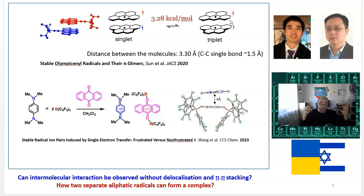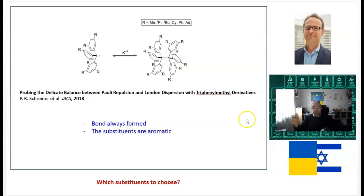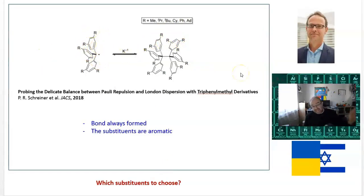Can intermolecular interaction like that with spin inversion be observed without the delocalization and pi-pi stacking? Can we make two radicals with localized electrons to form a complex? The idea comes from Professor Schreiner's group. He studied the coupling of radicals with aryl substituents and saw that before this bond forms there is an attraction by London forces or London dispersion—a sort of van der Waals bond between those bulky substituents.